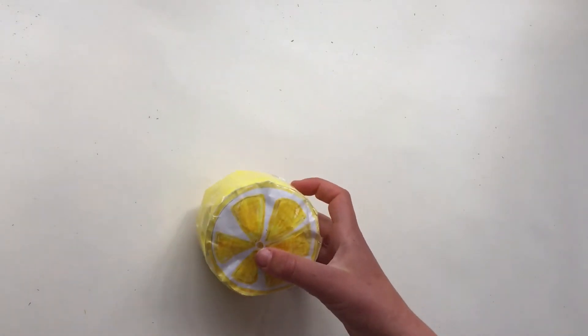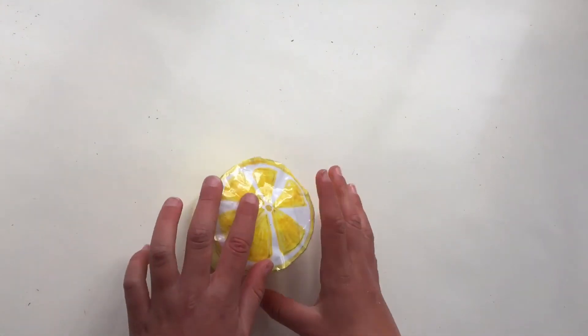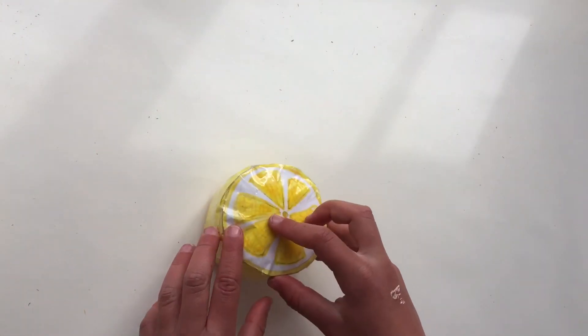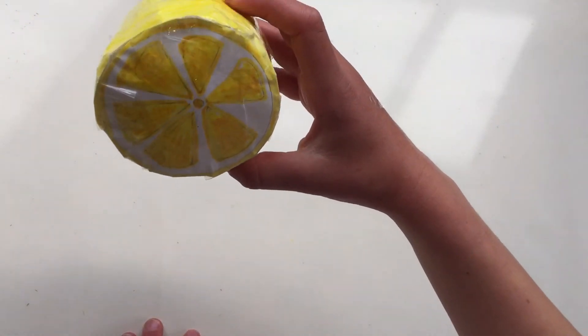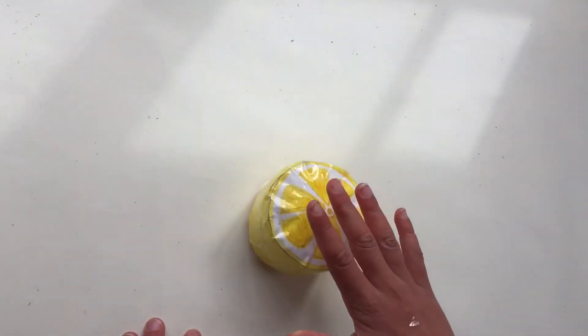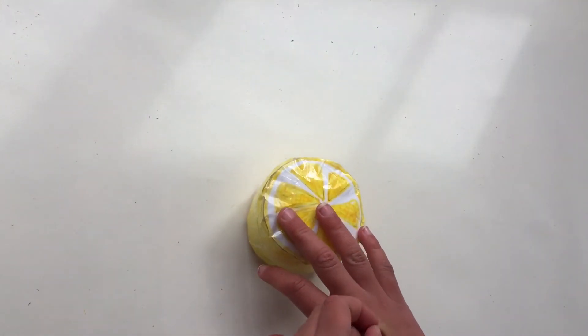Okay, so this is how my paper squishy lemon turned out. I really like the patterns that I've done here. It was so easy to make and listen to the sound.